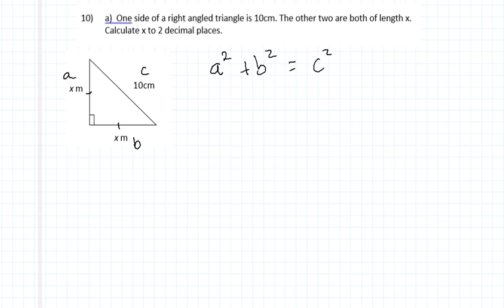So we end up having a squared, which becomes x squared, and then b squared, which becomes x squared. And then we've got c squared, which in this case is 10, becomes 10 squared. Now we can simplify this a bit.